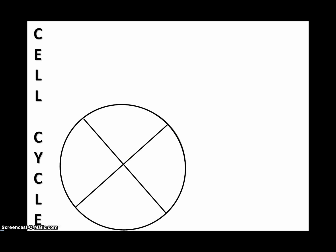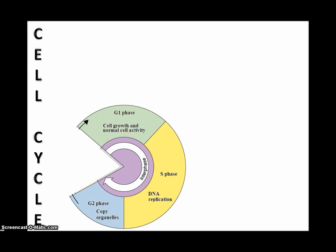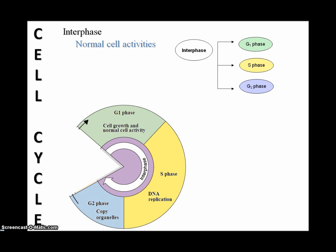In regards to the cell cycle, there are three key stages or phases that need to be completed. To best express this, it's easiest to describe it in terms of a pie diagram. On your paper, draw a circle and divide it into four equal sections, as you can see below. Once you've done that, label the first three quarters as interphase.